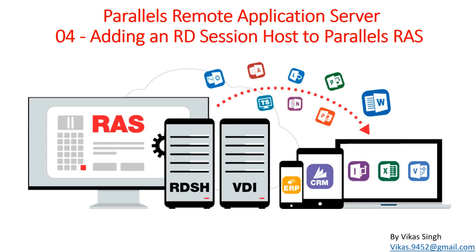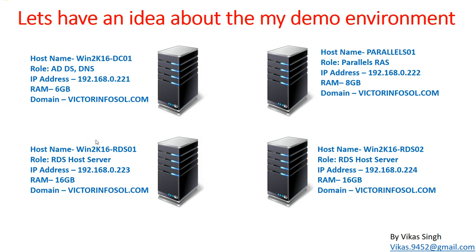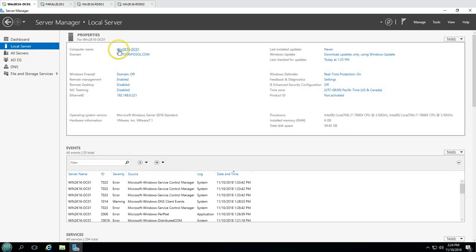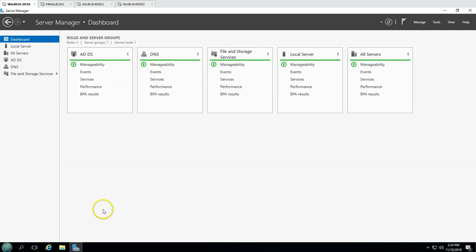Hi friends, welcome to my channel. This is the fourth video in the Parallels Remote Application Services RAS server training. In this video I'm going to show you how to add an RDS session host server to Parallels Remote Application Servers. We have four virtual machines in this demo environment. The first machine is win2k16dc01, which is my domain controller and DNS server, and my domain name is victorinfosol.com.